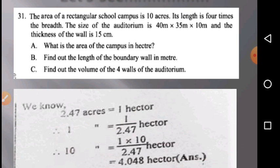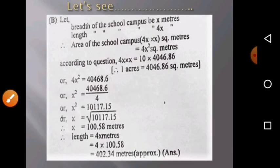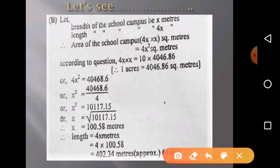Question B: Find out the length of the boundary wall in meters. Here you can see the breadth of the school campus is x meters and length will be 4x. So the area of the school campus is 4x × x, that's 4x² square meters.